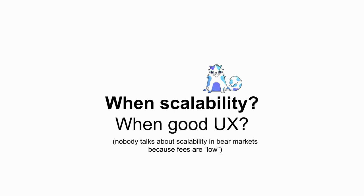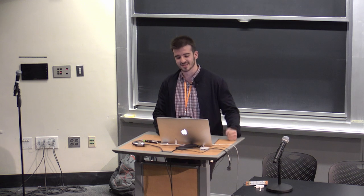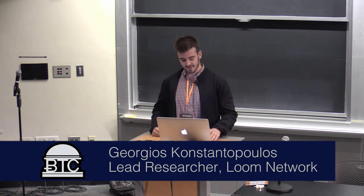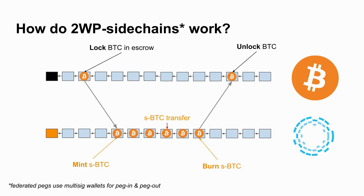Currently everybody's talking about UX and whatever, but the bear market allows us to do that. When the next scalability problems arrive, we need to be ready. So let's start with some fundamentals on sidechains. We have a sending chain and a destination chain. The process is that you lock some UTXO you have in an escrow, and then the other chain creates a new asset based on the asset that was just locked.